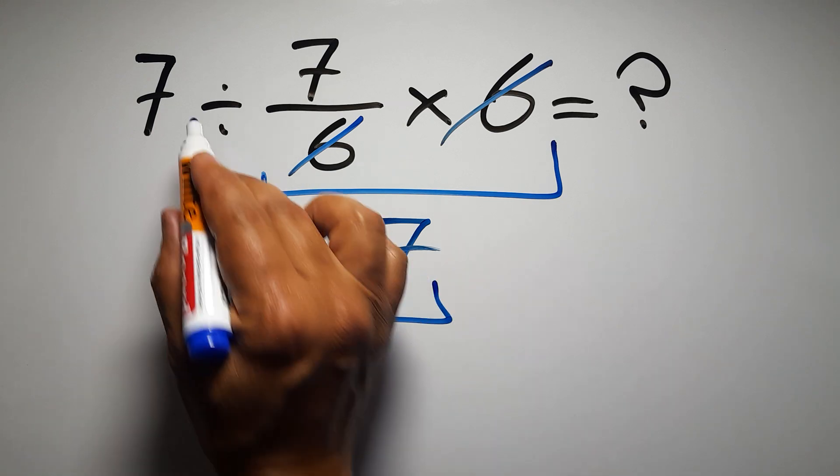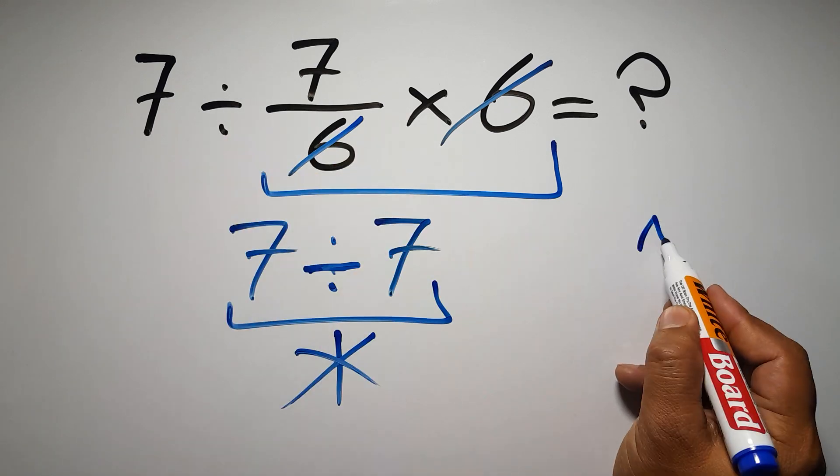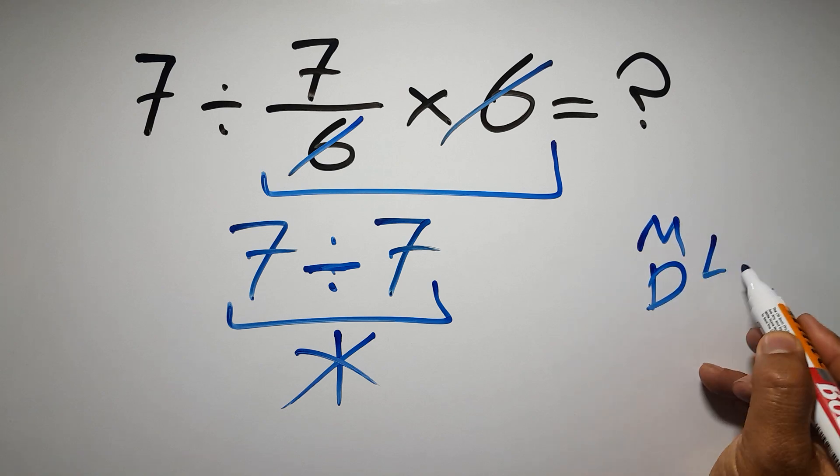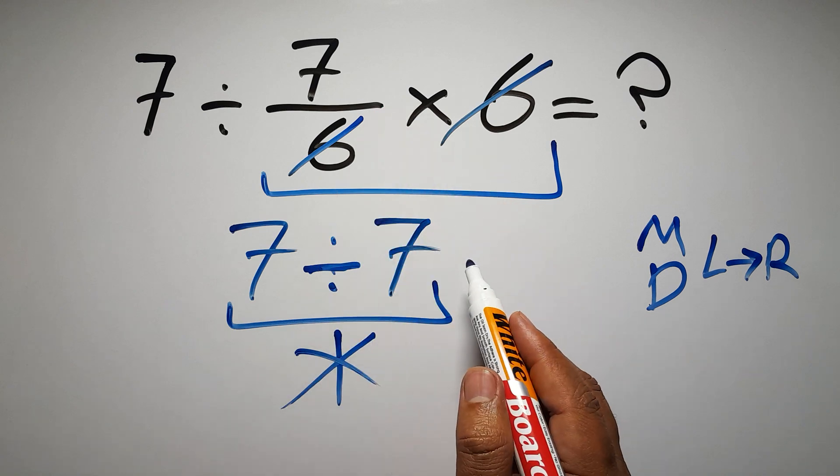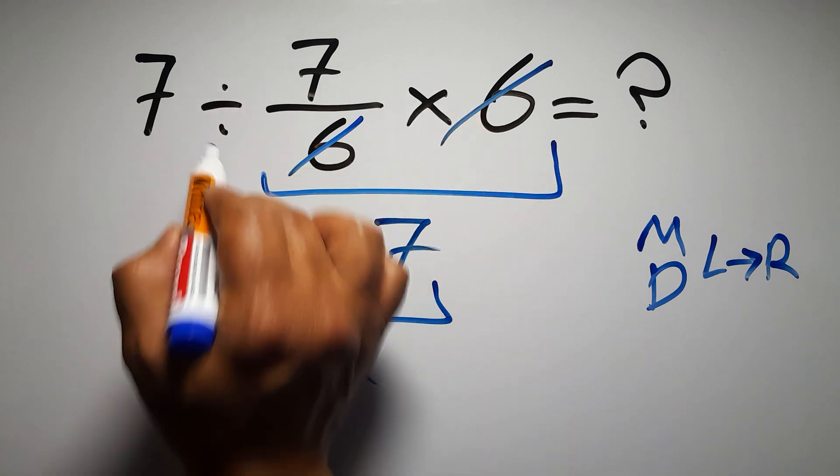According to the order of operations, multiplication and division have equal priority, and we have to work from left to right. So here, first we have to do this division, then this multiplication. If we do this multiplication before this division, it is wrong.